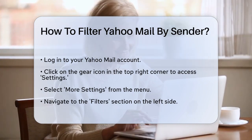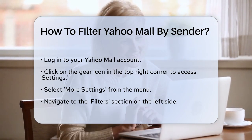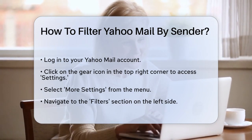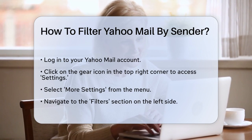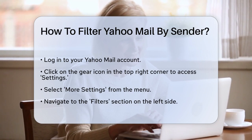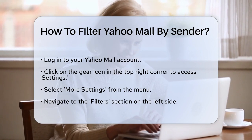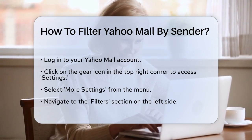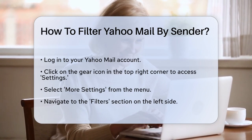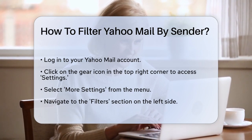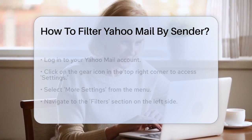In the More Settings section, you'll find a menu on the left side. Click on Filters and then select Add New Filters on the right side. This is where you can create a new filter.